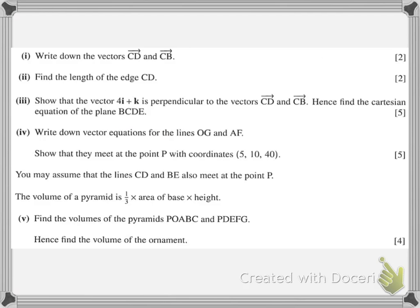Taking a look through the question, we've got several parts to answer here. The first part should be fairly straightforward, just writing down a couple of vectors. Finding a length, that should be Pythagoras again. Then we're showing that something's perpendicular. Whenever we get show that, we need to make sure that we show plenty of working. Things being perpendicular, that'll be to do with the dot product being zero. We must remember to keep going back to the question. Hence, so using what we've just done, find the Cartesian equation of the plane.